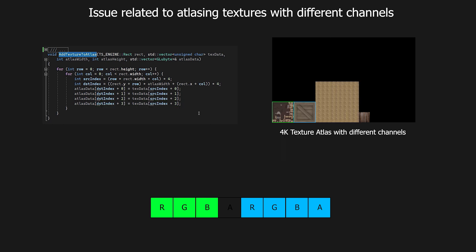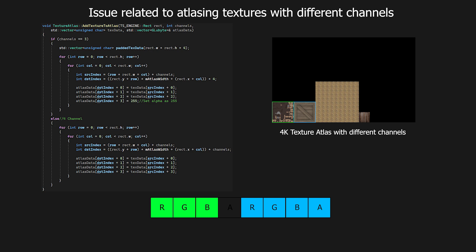To fix this issue I have modified the add_texture_to_atlas function. Now it checks if the number of channels for the texture is 3, and then adds padding for the alpha channel. This helps fill the missing alpha channel and maintain a continuous texel channel sequence for atlas texture memory.